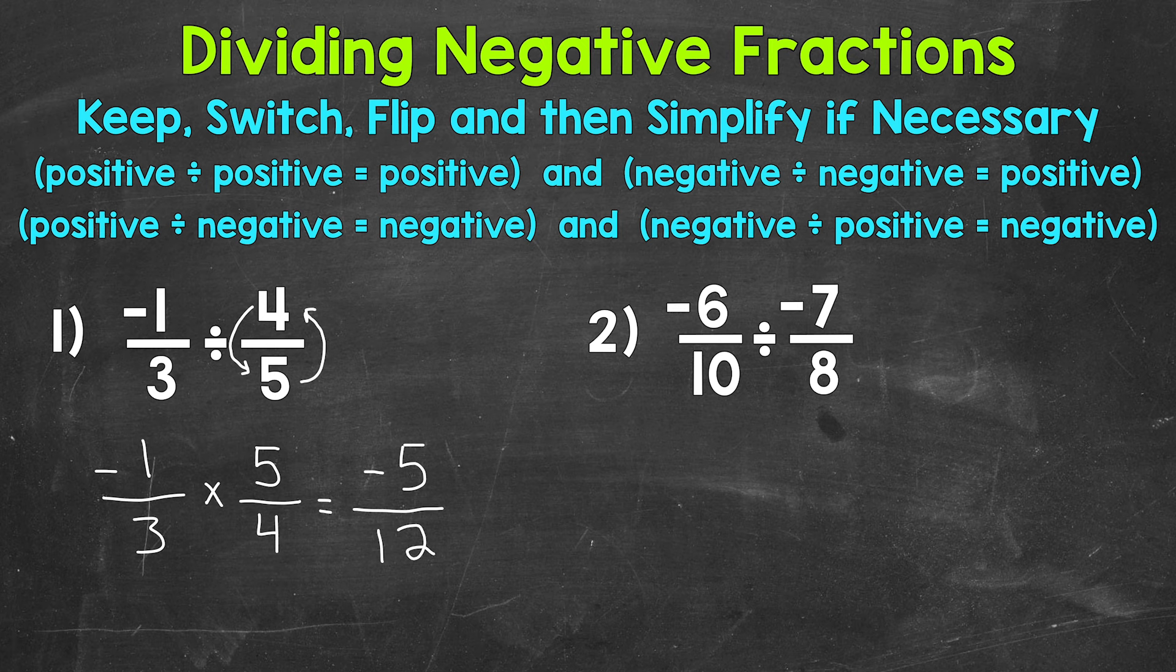Now that fraction is in simplest form. The only common factor is one. So we are done. Negative five twelfths.